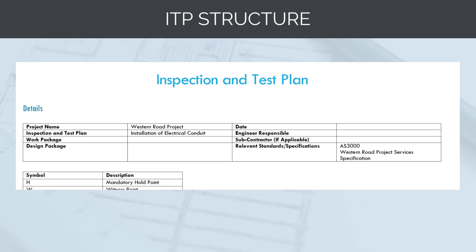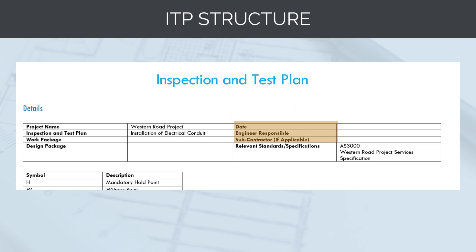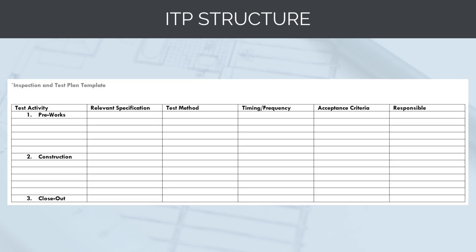Let's now look at how an ITP is structured. Attached to the course notes is an example inspection and test plan structure that we'll populate as we work through this section. The top section of an ITP is where you fill out all the background information — basic things like the project name, relevant design package, the engineer or supervisor managing the works, date, subcontractor responsible, and so on. Under that is the basic structure of the ITP, where we'll write out the detailed activity steps and key points so we know exactly how to complete all the quality control checks necessary for the activity.